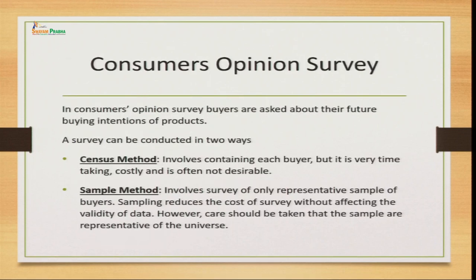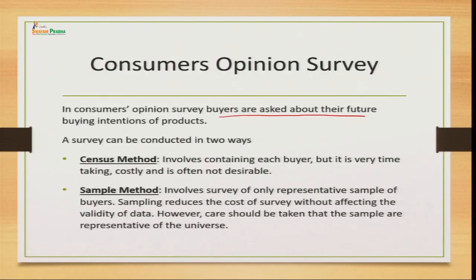Under qualitative methods, we have five techniques: consumer opinion method, sales force composite method, expert opinion method, market simulation, and test marketing. Under quantitative methods, we have four: trend projections, smoothing technique, barometric, and econometric. The first qualitative technique is consumer opinion survey - we take opinions from consumers with the belief that since consumers are the ultimate persons consuming the product, they are better positioned to know demand. Here, buyers are asked about their future buying intentions. Survey can be done in two ways: census method and sample method.